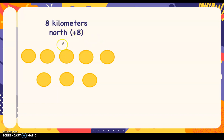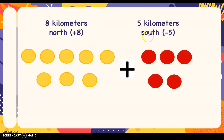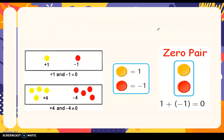The cyclist cycles from zero going north, which is eight kilometers north. We represent it as eight positive integers — one, two, three, four, five, six, seven, eight. Then he goes back five kilometers south. So we are going to add eight kilometers north, then five kilometers going south, and that five represents red chips — five red chips. Let's talk first about zero pairs.